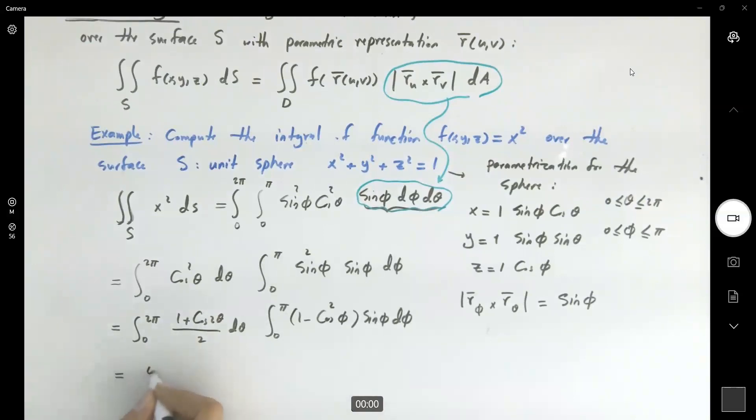This is θ/2, this is θ/2 plus 1/4 sin 2θ. θ is bounded between 0 to 2π. And for this, if you take the integral with respect to sine, you have -cos φ, and here, if you use u-substitution, you get -1/3 cos³ φ.